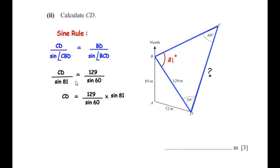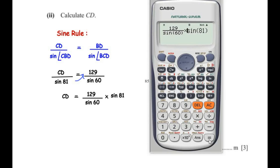Taking sin 81° to the other side, it multiplies with the fraction. This gives CD = 129 × sin 81° / sin 60° = 147.122, which rounds to 147.1 meters. So the length of CD is 147.1 meters.